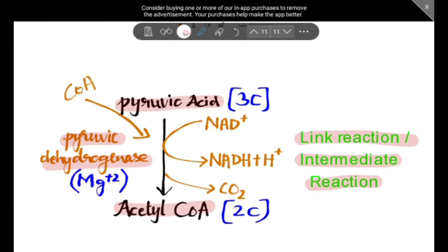So, how to remember the enzyme name? Pyruvic means pyruvic acid. Dehydrogenase means removal of hydrogens from pyruvic acid. For this enzyme to work, it requires many coenzymes like coenzyme A, NAD+. For the activation of pyruvic dehydrogenase, it also requires Mg²⁺.